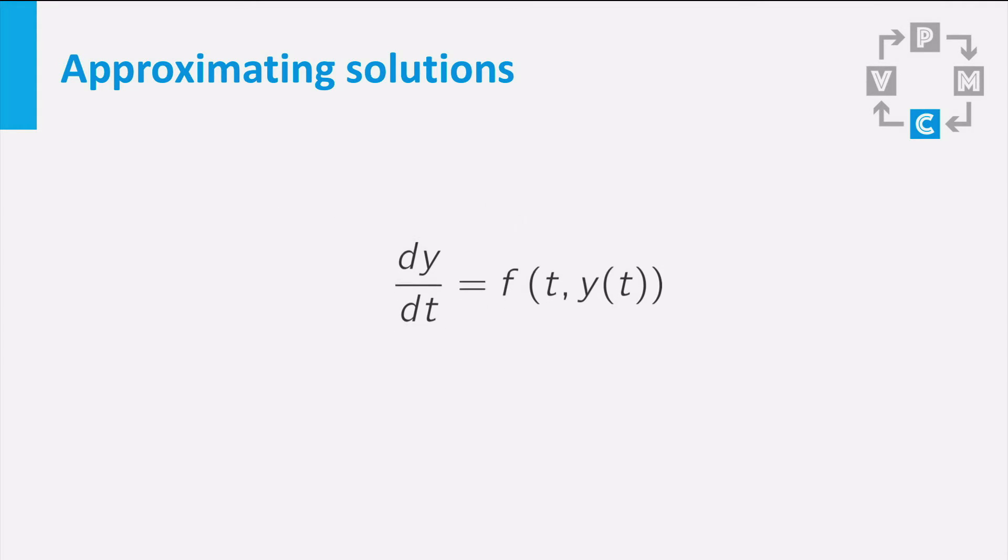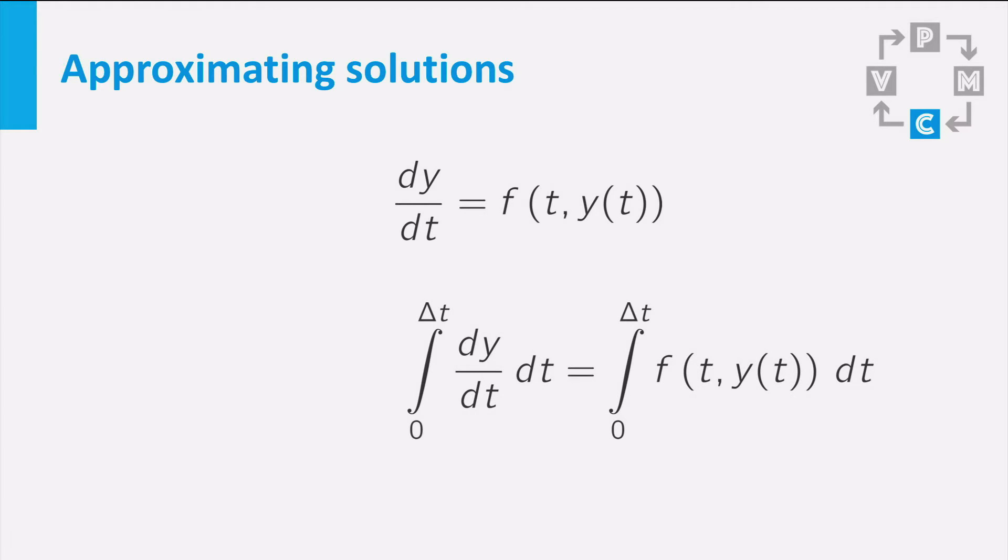We are interested in a function y at some time t. So to obtain the function y itself, we can integrate the left hand side. Of course, we should do the same on the right hand side of the differential equation. So let us integrate the differential equation over time period from 0 to delta t. Delta t is some number representing the time interval over which we integrate. So delta t could be, for example, 2 days or 4 seconds. Using the fundamental theorem of calculus, the left hand side simplifies to y at time delta t minus y at time 0.